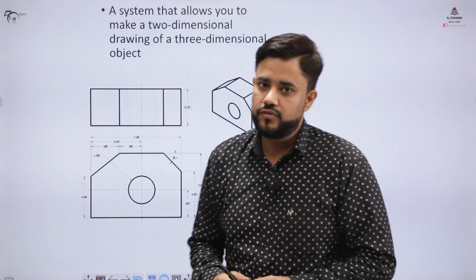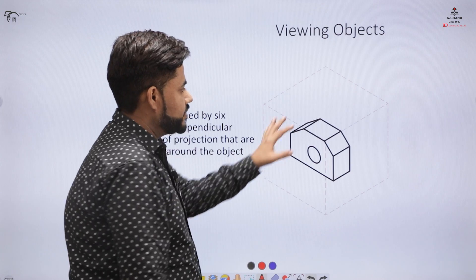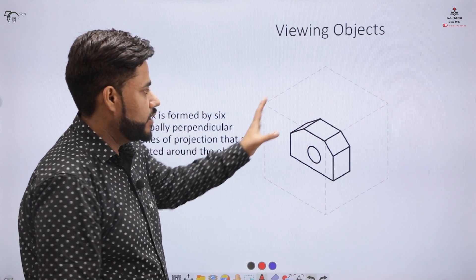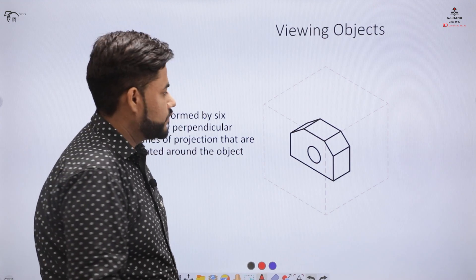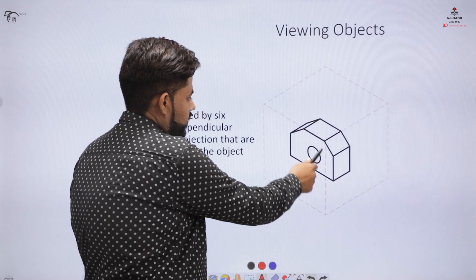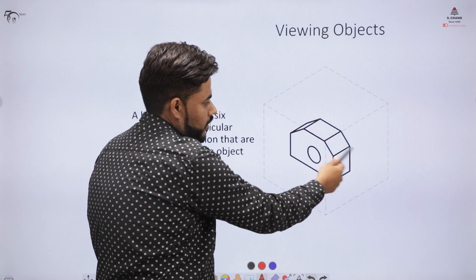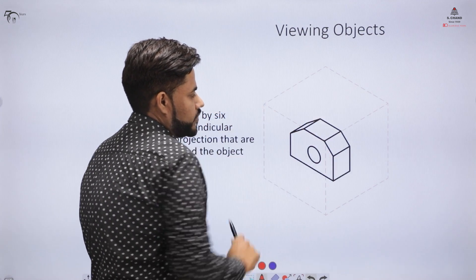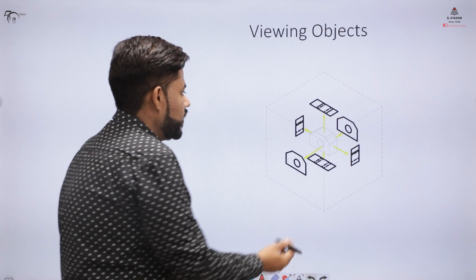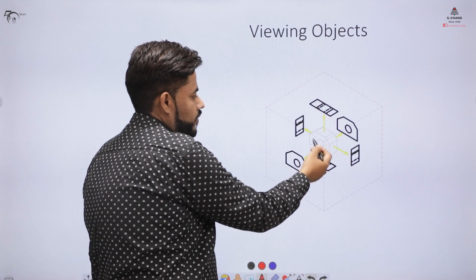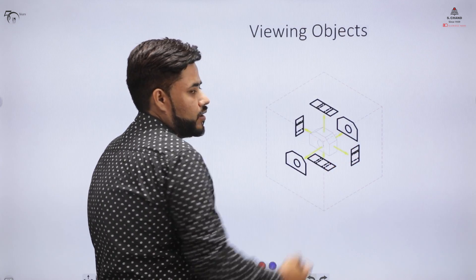In today's video, this confusion will be clarified. We will keep this object inside a box and look for certain views. There would be 6 different views that can be formed of this object. This is the front part, this is the top part, and at the bottom you have another view. On the sides you have additional views. Specifically, this object — which is an isometric view — can have the front view, the bottom view, the top view, and similarly the side views.